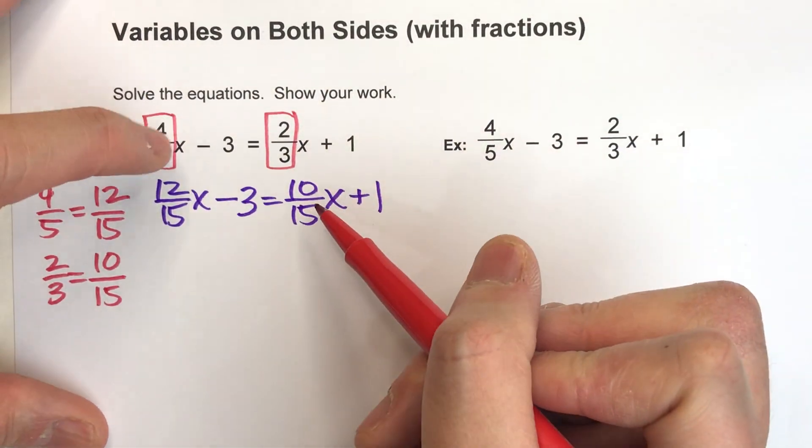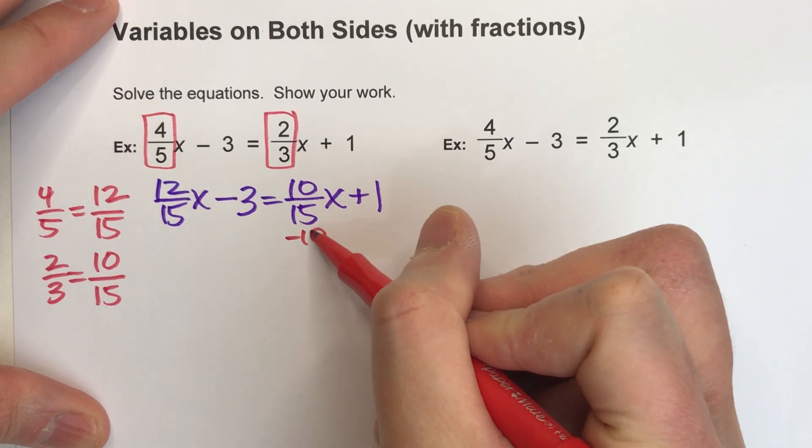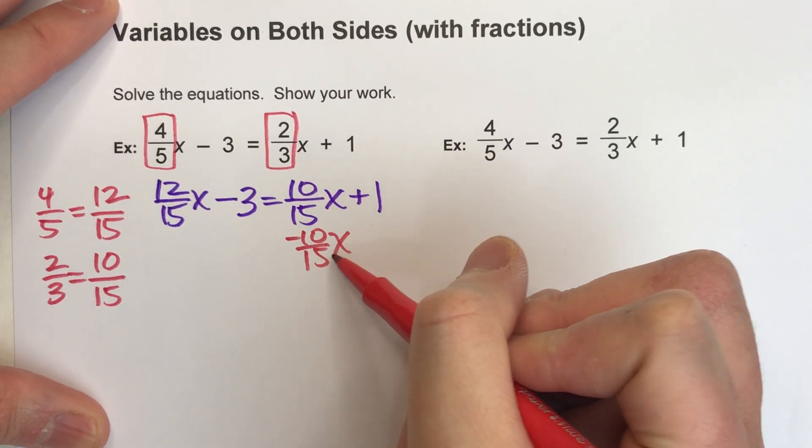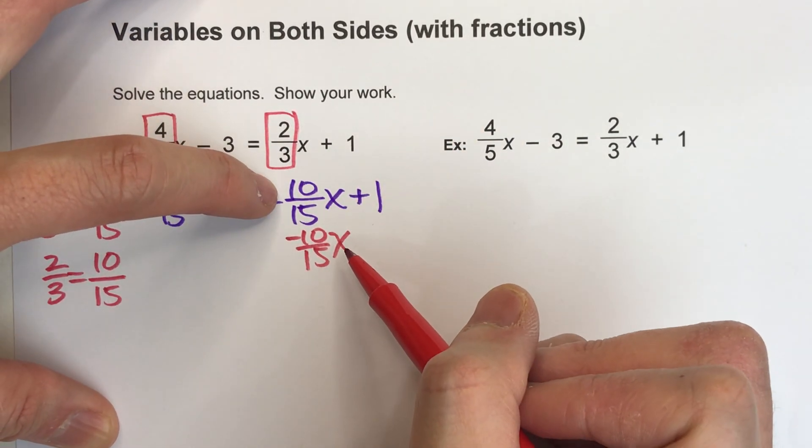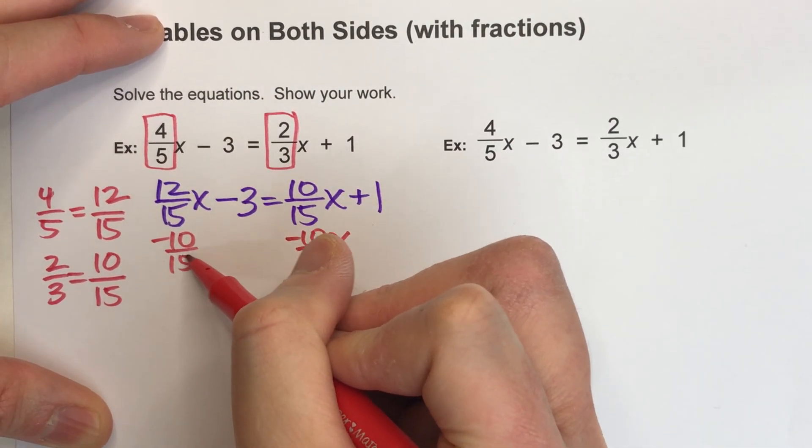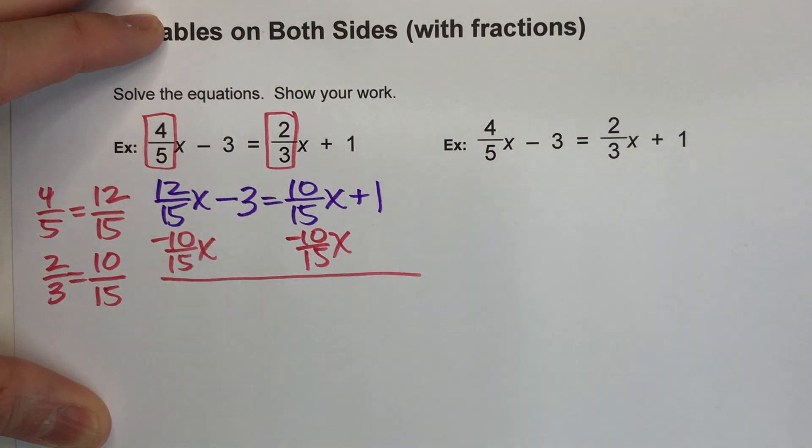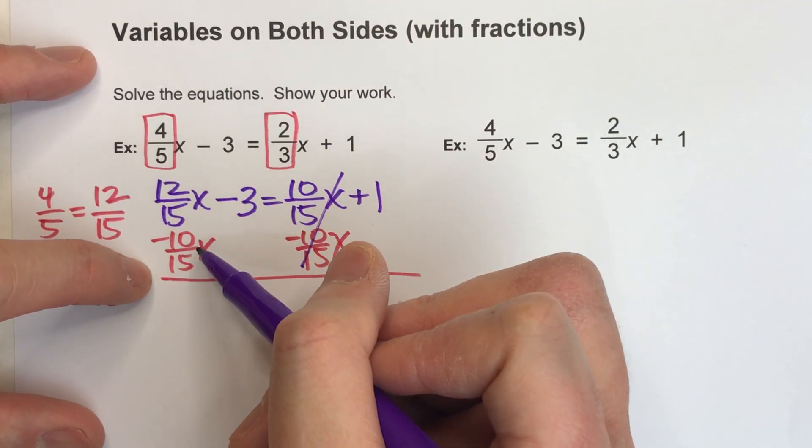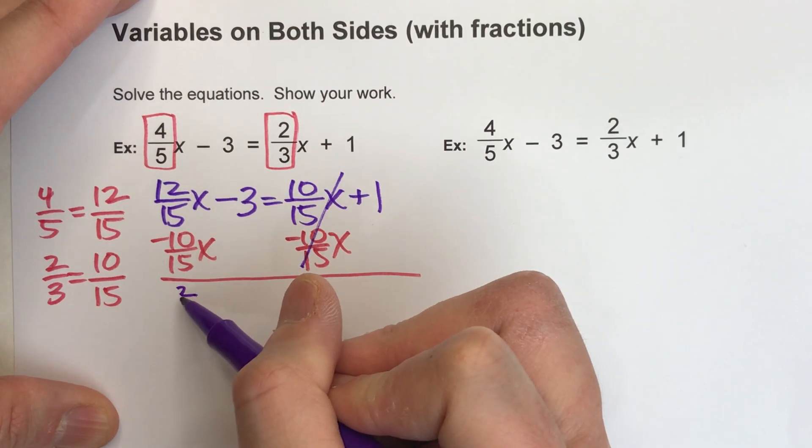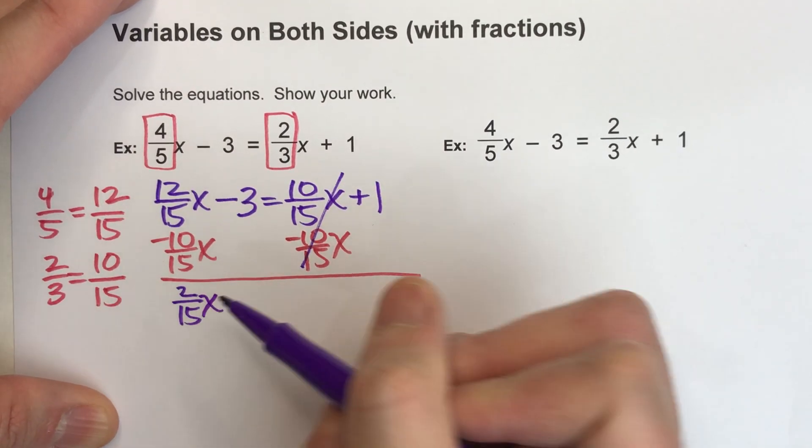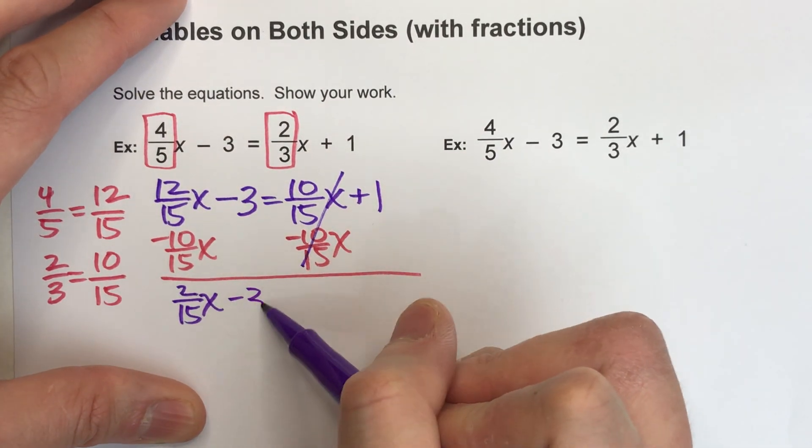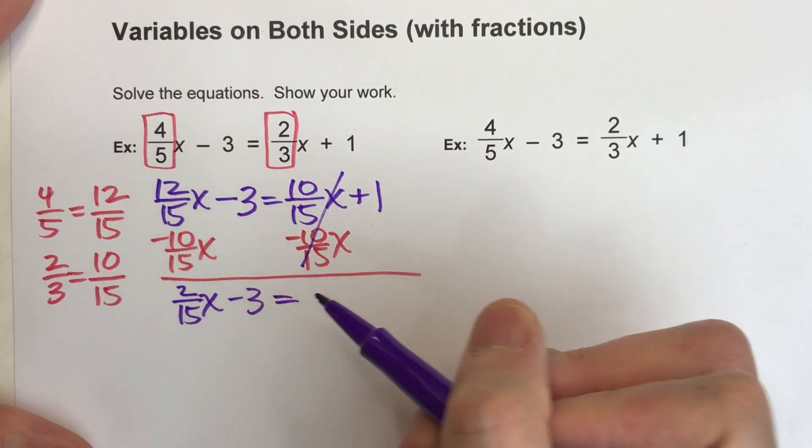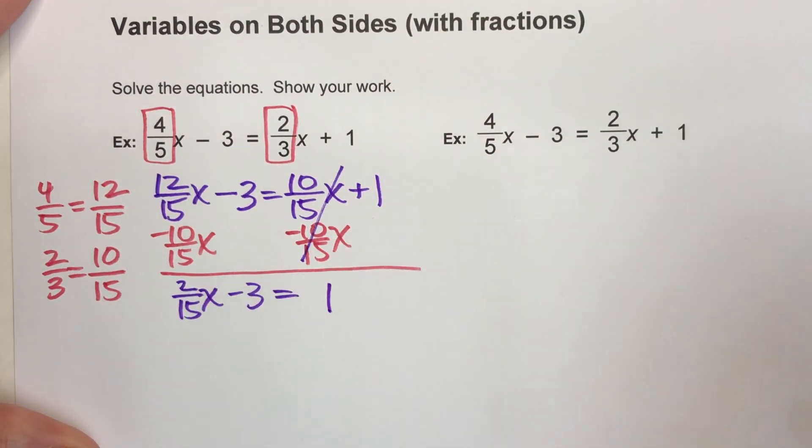Because now I've got x's on both sides, my next step is to subtract off all the x's off one side. But what I do to one side, I have to do to the other side. When I do that, these undo each other. But 12/15 take away 10/15 gets me 2/15. So this is 2/15x, the minus 3 drops down, the equals drops down, and all that's left on the other side is just this 1.